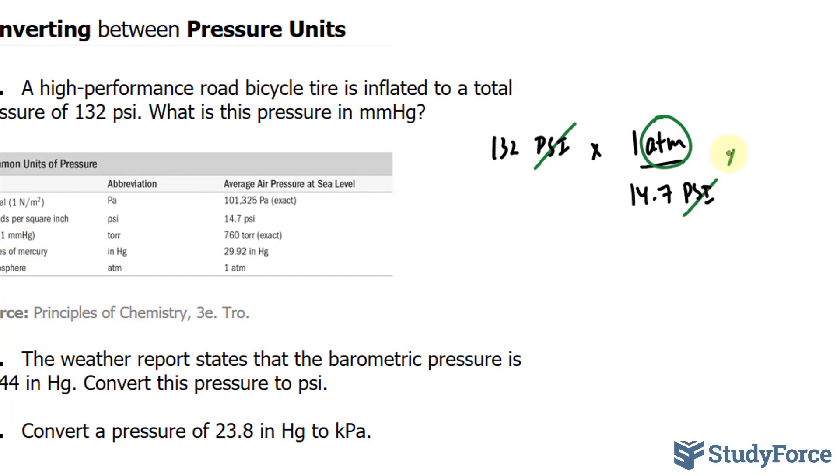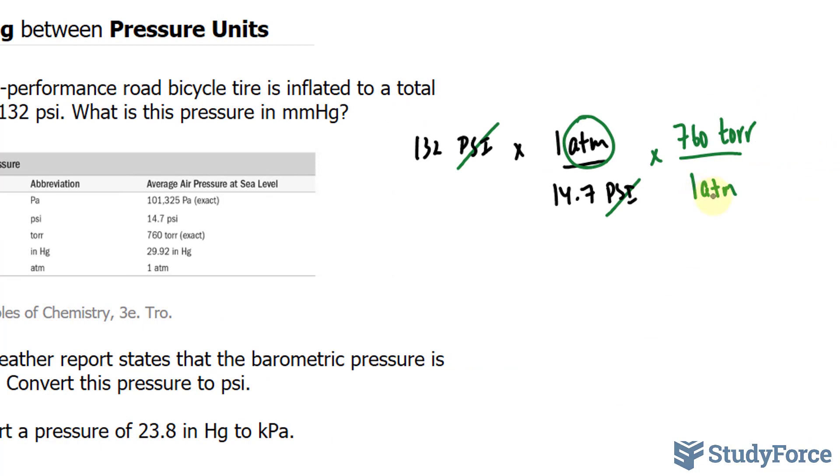So this time, I'll multiply what I have so far by 1 atm per 760 torr. Notice what happens. This atm will cancel out with this atm, and we're left with torr, and that represents 1 mmHg.